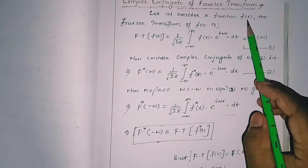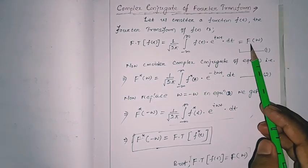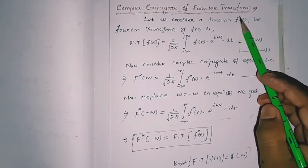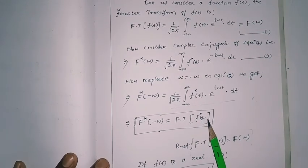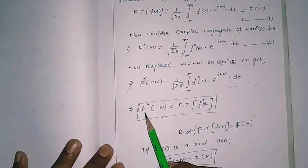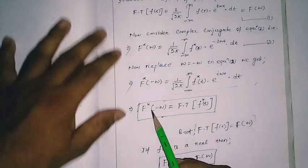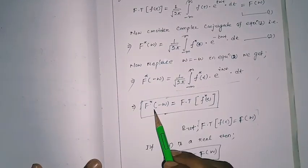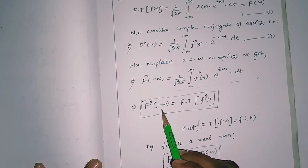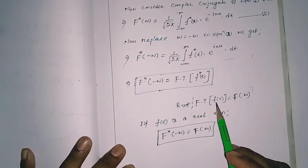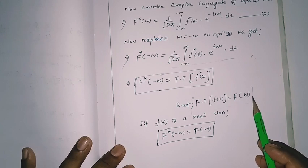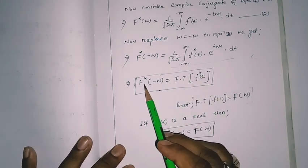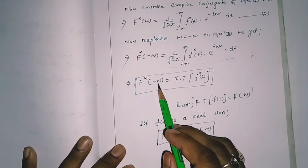Initially we considered small f(t) and its corresponding Fourier transform is F(ω). But if we consider its complex conjugate f*(t), then the Fourier transform of f*(t) will be the complex conjugate of F of minus ω. So the Fourier transform of f(t) is capital F(ω), but the Fourier transform of f*(t) is the complex conjugate of F evaluated at minus ω.